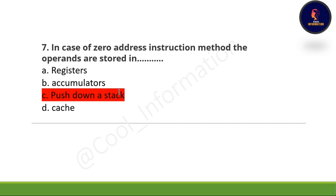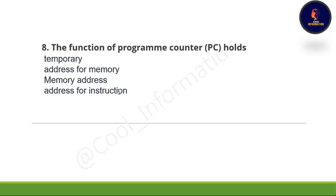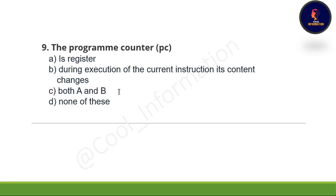Eighth question: The function of the program counter (PC) — what does it hold? Options are: temporary address for memory, memory address, or address for instruction. The correct option is option D, which is address for instruction.